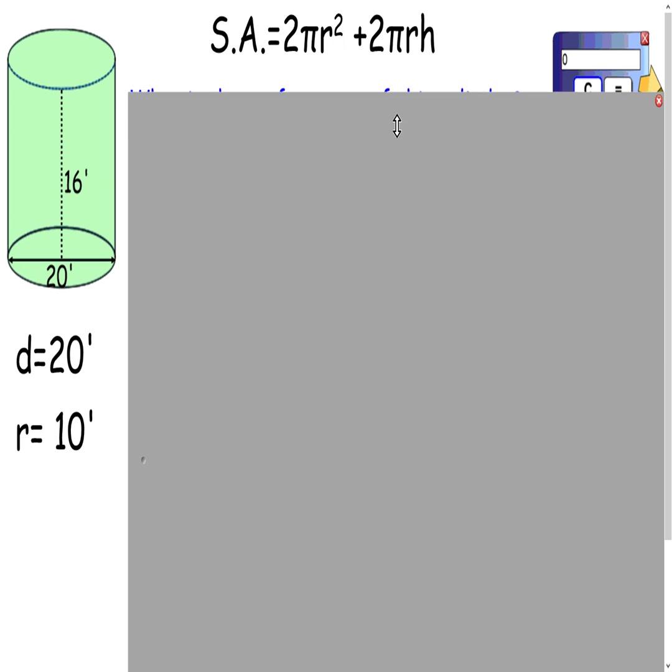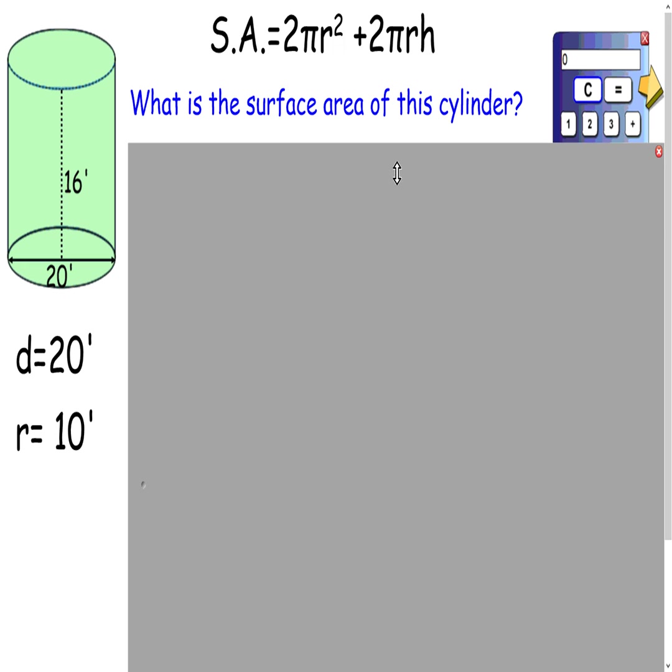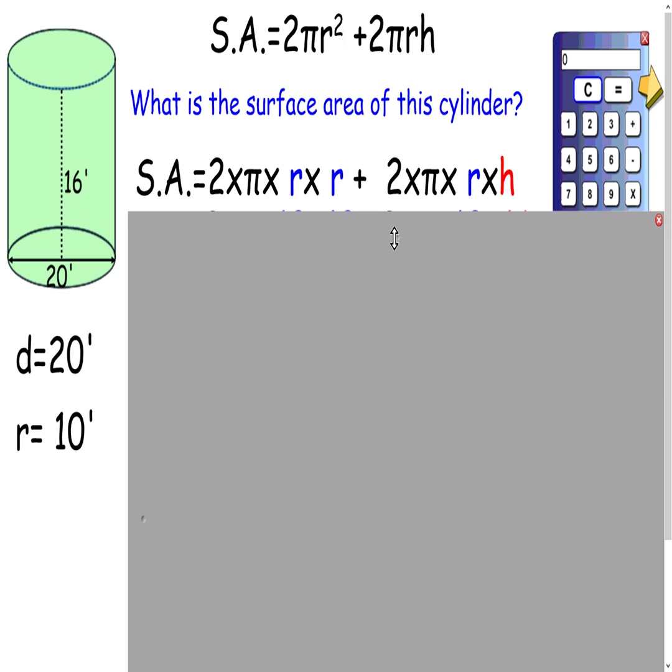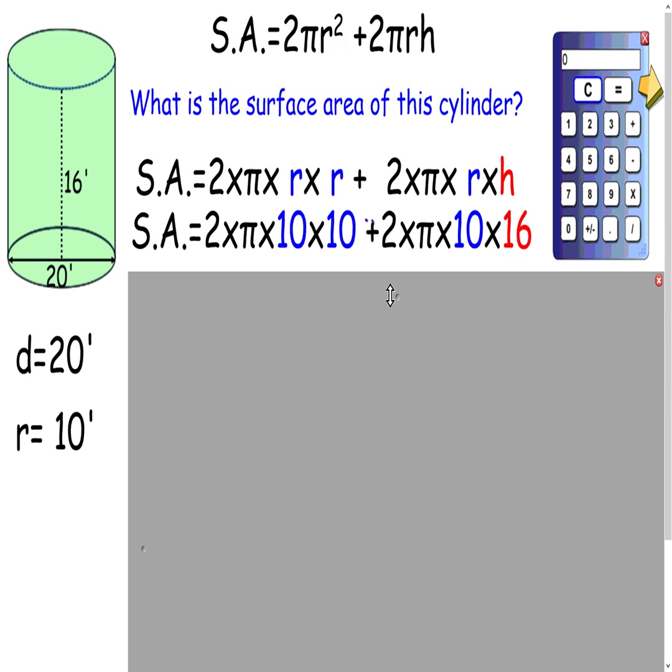So when we look at our formula, we want to know what's the surface area of this cylinder. We've got 2 pi r squared, so 2 times pi times r times r, and then 2 times pi times r times h. Plug in our r of 10 and plug in our h of 16.